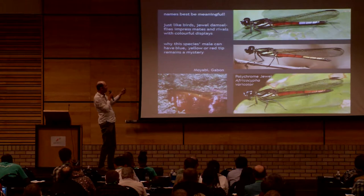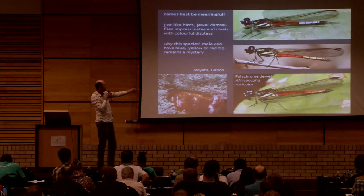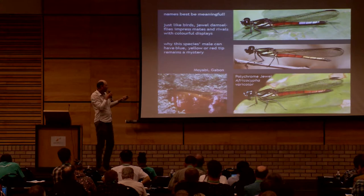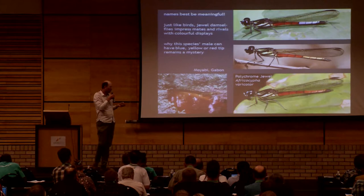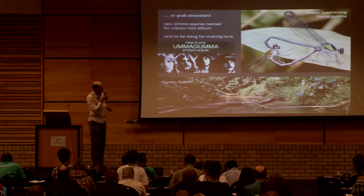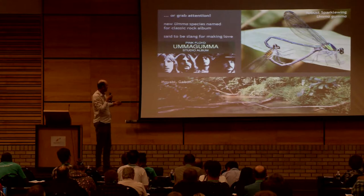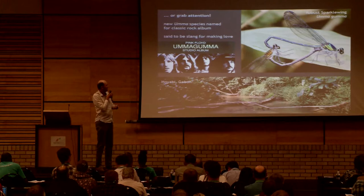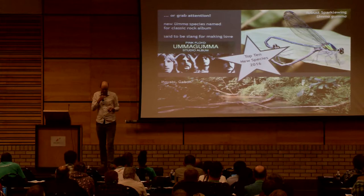Here's another example of a nicely named species — a damselfly from Gabon. In this family, males use bright colors to impress females and rival males. This species has three color forms in males, unique among African dragonflies, and we still have to find out why. The name had to express that, so it became Africocypha varicolor, the polychrome jewel. And of course names can also grab attention — in the genus Umma, a friend told me 15 years ago: if you ever discover a new species of Umma, please call it after the Pink Floyd album Ummagumma — which is exactly what I did, and it even earned a top-ten new species mention that year.